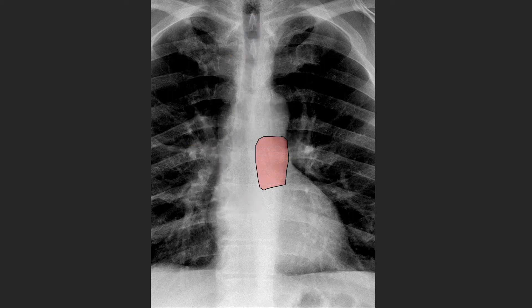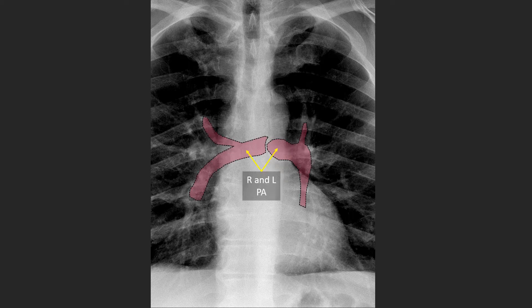Regarding the arteries, the first one is the main pulmonary artery, which comes off the right ventricle. The artery then divides into the right and left pulmonary arteries. The right pulmonary artery has a very horizontal course, whereas the left pulmonary artery goes up and over the left main stem airway.